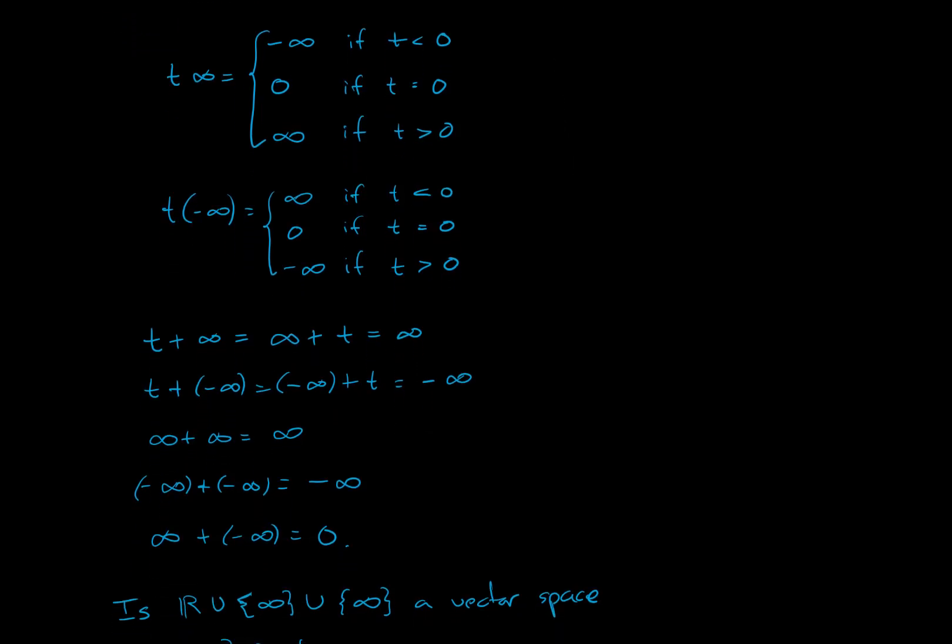And we want to know if that is a vector space under these operations. So most of these operations make sense. When you look at them, a scalar t times ∞ is −∞ if the scalar is less than zero, it's zero if t is zero, and it's ∞ if t is greater than zero.